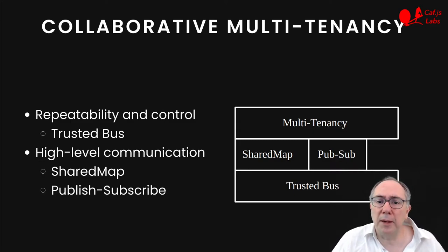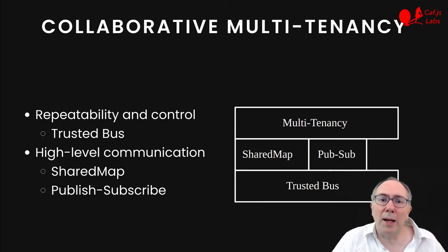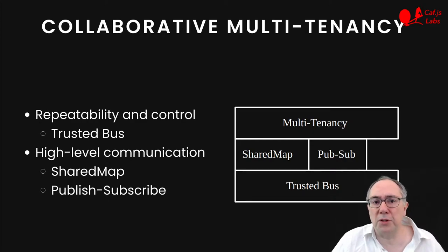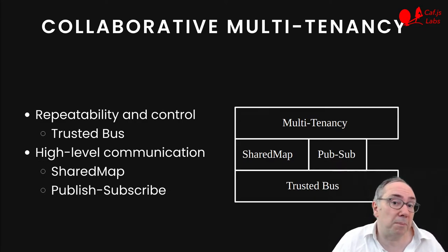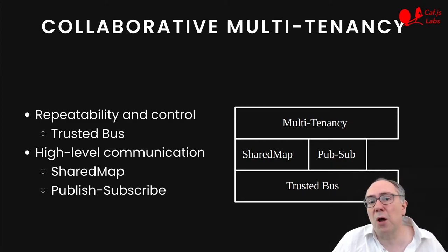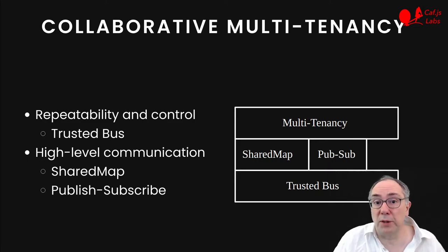How do we help interaction? In KVGS, we build high-level communication primitives on top of that bus. For example, a shared map to help you distribute data in a very cost-effective manner, or a traditional publish-subscribe abstraction. And of course, we also need to provide the core properties of multi-tenancy.